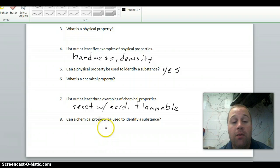Can a chemical property be used to identify a substance? No. The reason why, there's lots of things that you can set on fire. There's lots of things that react with an acid. That's not going to tell you specifically what's going on.